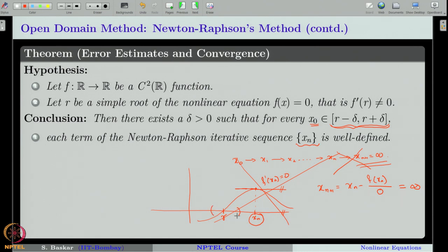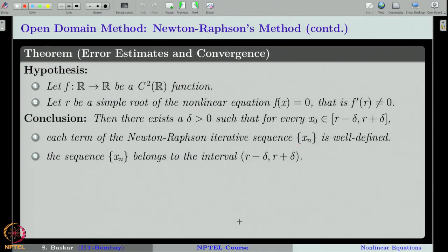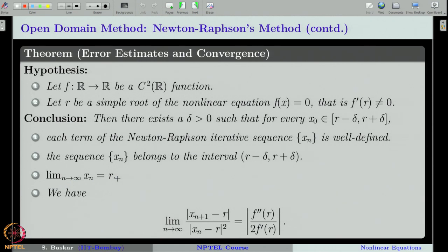If you restrict yourself to this neighborhood and start with x_0 there, then x_1 will be somewhere in the interval, x_2 somewhere in the interval, and x_3 as well. Everything will lie in this interval — all x_n will remain in this interval and be well defined. Furthermore, the sequence x_n will also converge to the root r, and this gives us quadratic convergence of the Newton-Raphson method.